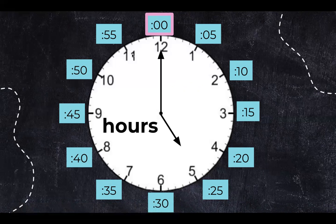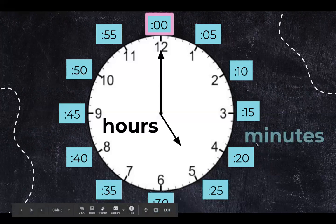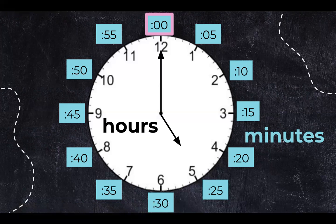The numbers on the inside of the clock tell us the hours. The numbers on the outside of the clock tell us the minutes. Do all clocks have minutes?